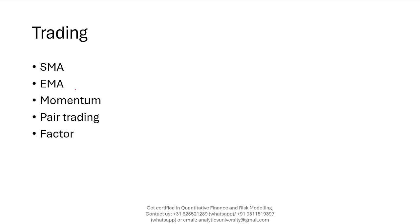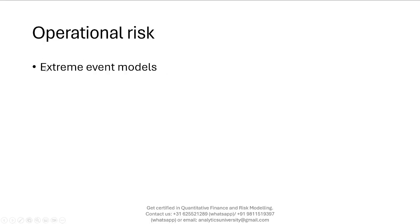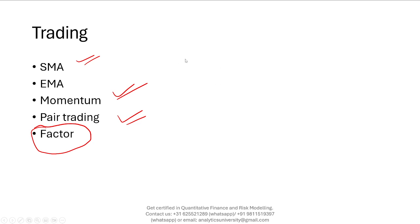If you're going to be working in trading, make sure you understand Simple Moving Average, Exponential Moving Average, momentum models, pairs trading models, and factor models and how they are used for investment purposes. In operational risk, a newly developed area, make sure you have a good understanding of Extreme Value Theory and how it is applied. Also get some understanding of climate risk and ESG. And foundationally, make sure you've studied financial econometrics — regression, time series models, tree models in machine learning, and cross-validation techniques.